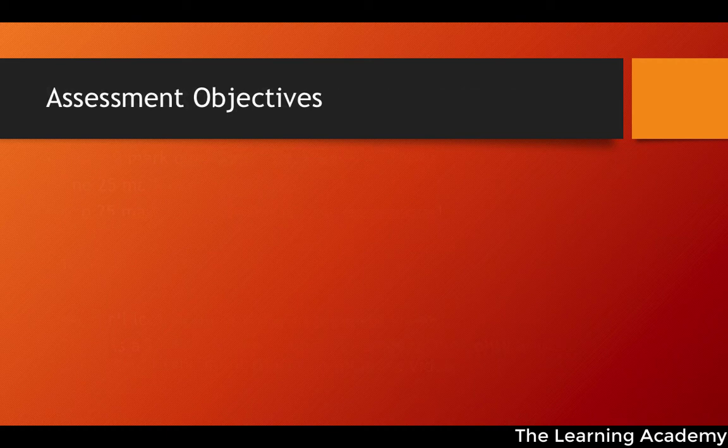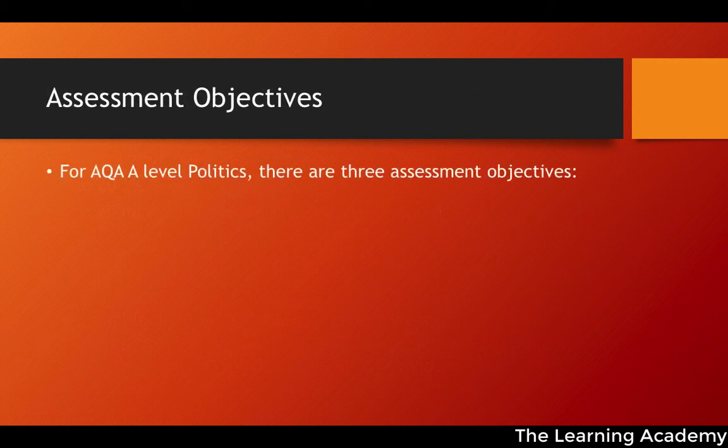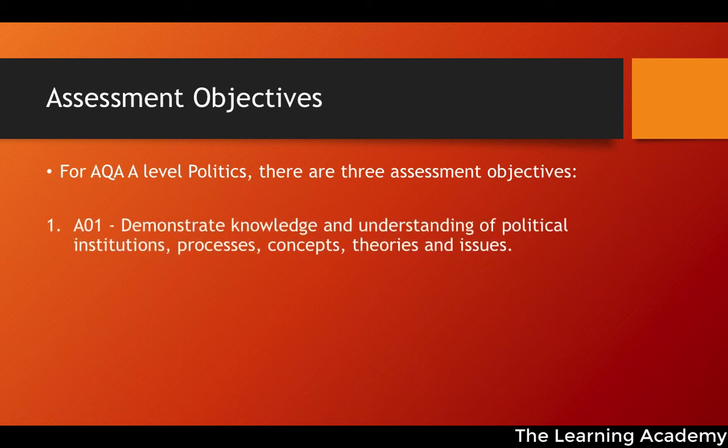So what are the assessment objectives in general? There are three main assessment objectives. The first is to demonstrate knowledge and understanding of political institutions, processes, concepts, theories, and issues. This is your knowledge assessment objective — the amount of detail you're able to go into and the up-to-date, relevant, sometimes niche examples that you can bring into your essays.